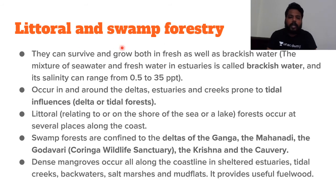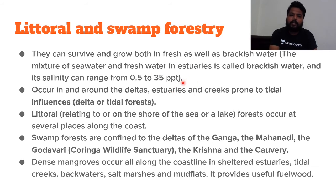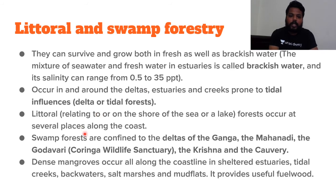In the moist category, we also find littoral and swamp forestry. Wherever we have brackish water — a mixture of seawater and freshwater in estuaries — salinity can range from 0.5 to 35 parts per thousand. Littoral forests occur in and around deltas, estuaries, and creeks prone to tidal influences. We find this along the deltas of the Ganga, Mahanadi, Godavari, Krishna, and Kaveri. Swamp forestry is confined to deltaic regions while littoral forests occur at several places along the coast.